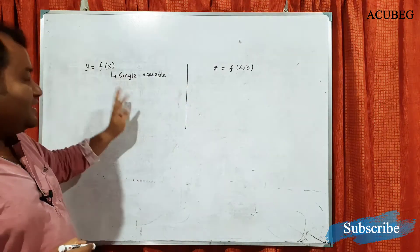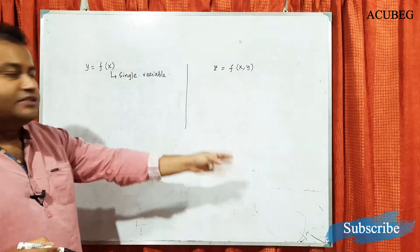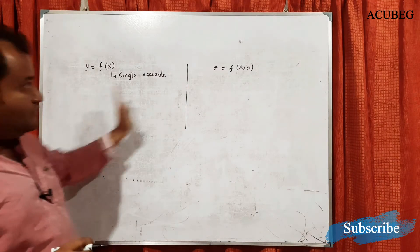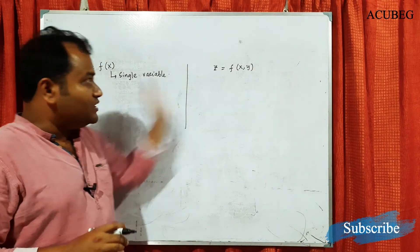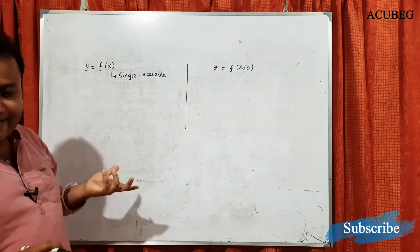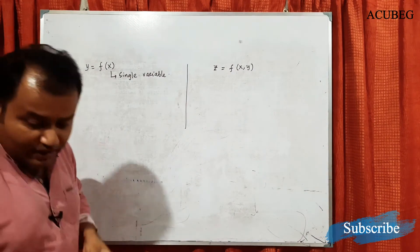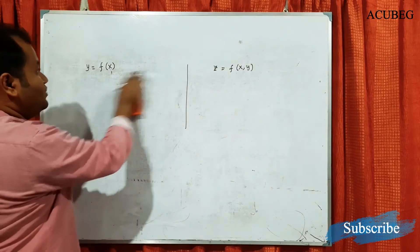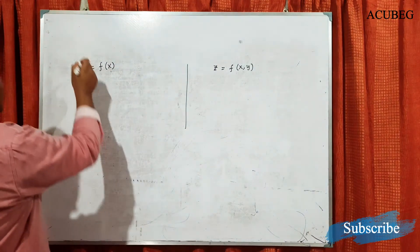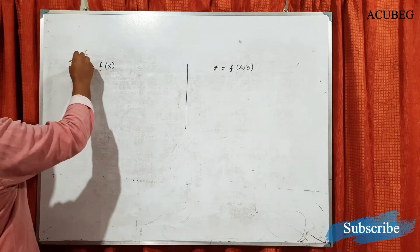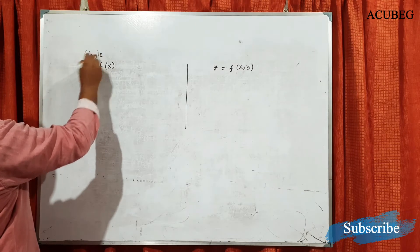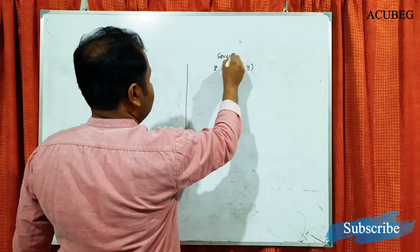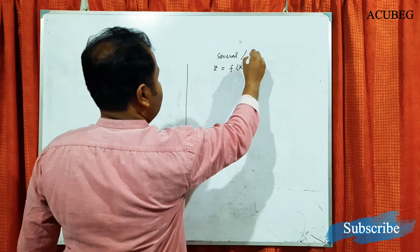This is one example of a function of several variables, or multivariable. Today's class we discuss the qualitative differences between these two. It may look similar, but what are the basic differences? This is single variable, and this is several variable, or multivariable.